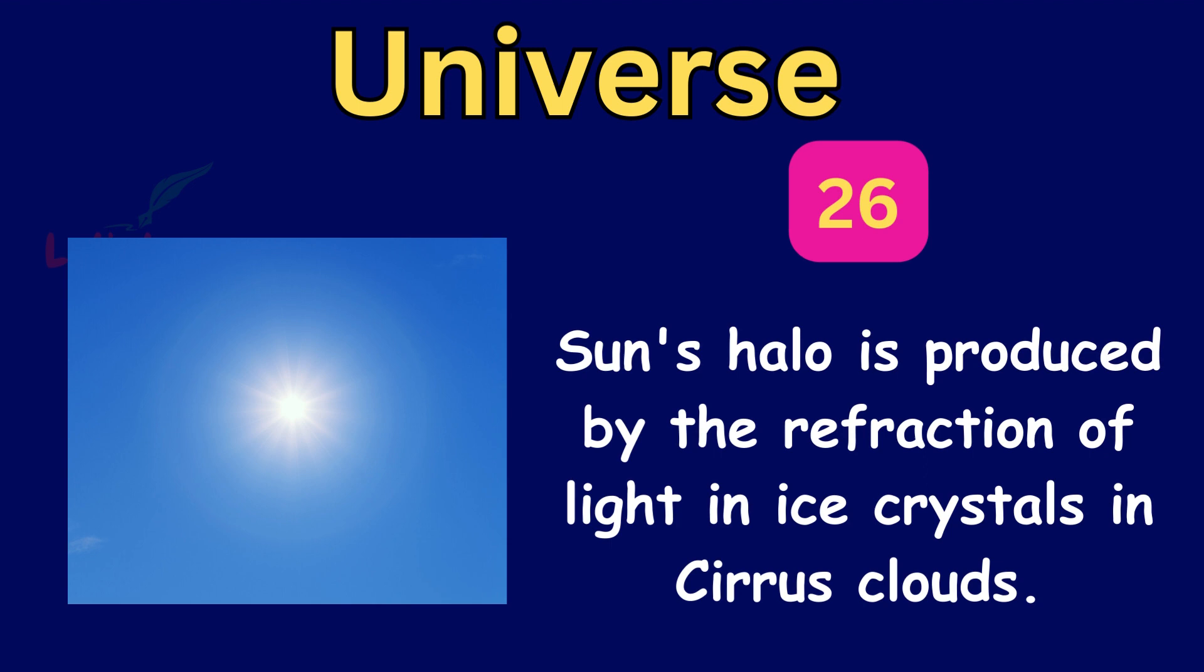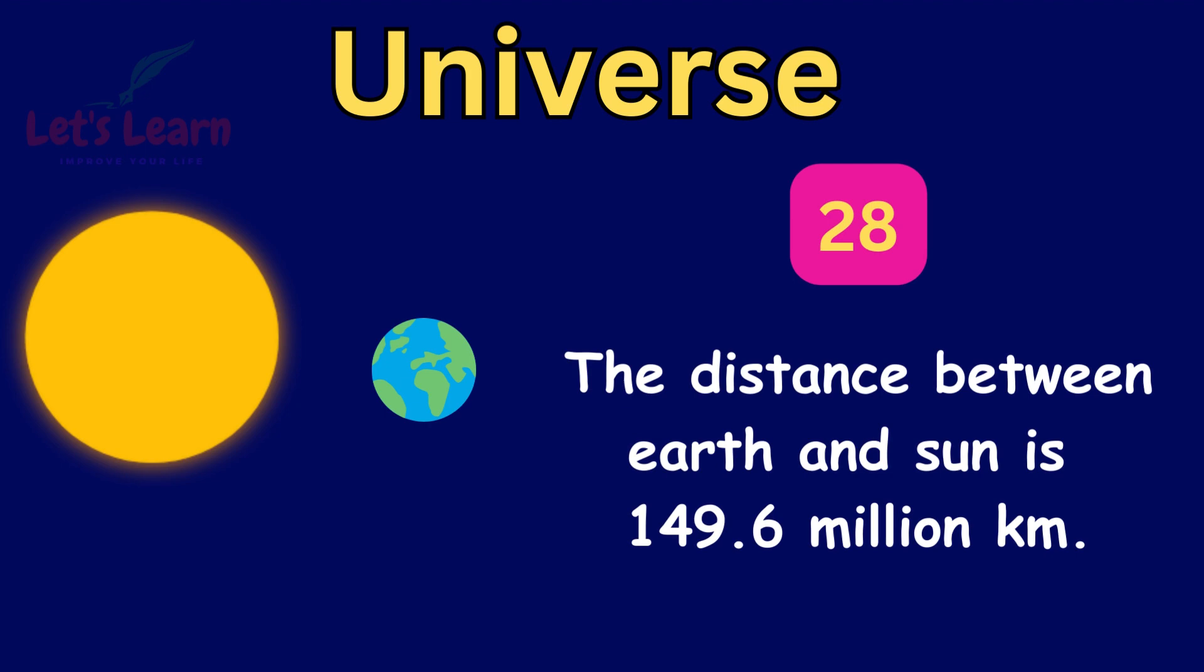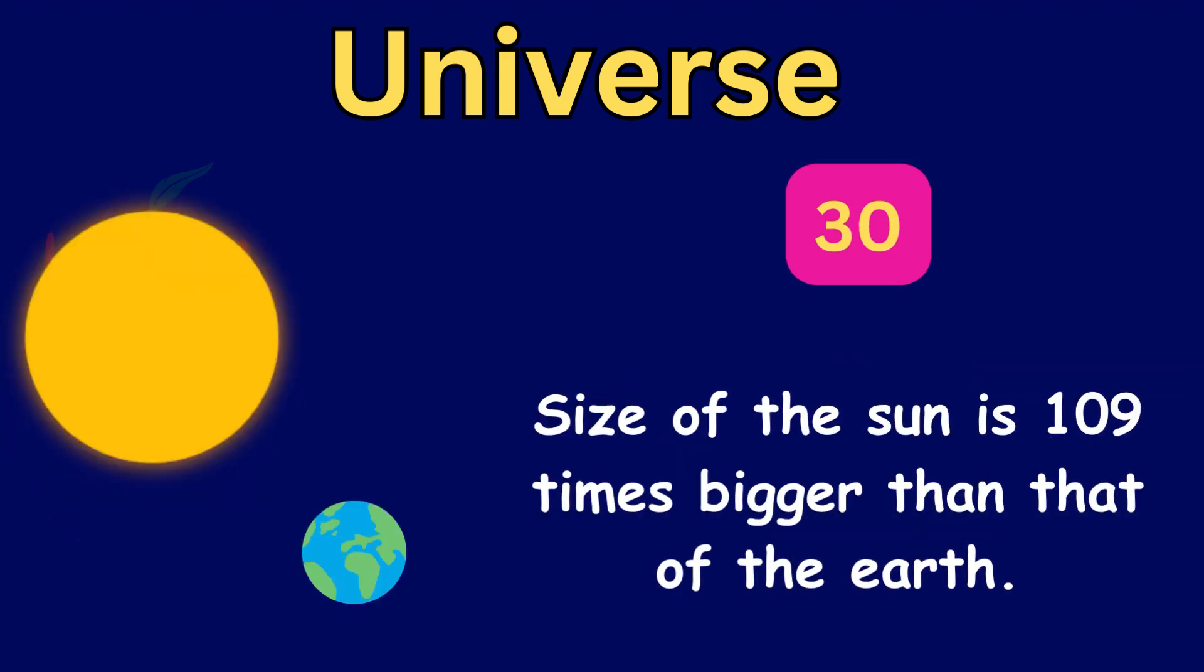Sun's halo is produced by the refraction of light in ice crystals in cirrus clouds. One astronomical unit is the average distance between Earth and Sun. The distance between Earth and Sun is 149.6 million km. The Earth is nearest to the Sun on 3rd January. The size of the Sun is 109 times bigger than that of the Earth.